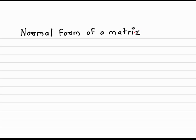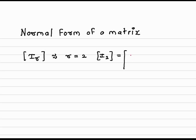The following are the forms. The very basic form is I_R, where I_R is an identity matrix of order R. For example, if R equals 2, I_R is I_2, which is nothing but the identity matrix of order 2. This is one particular example.